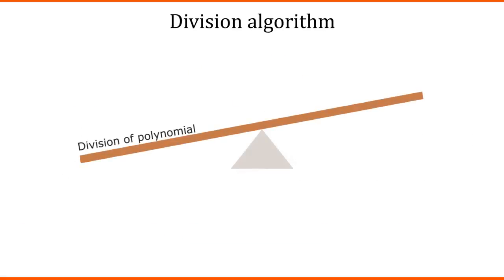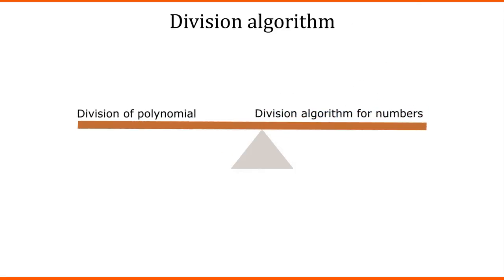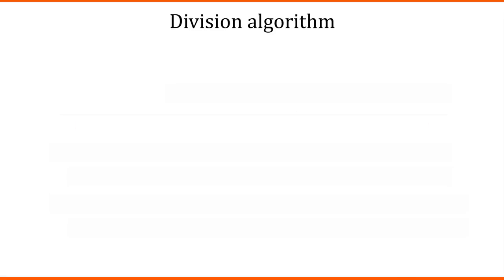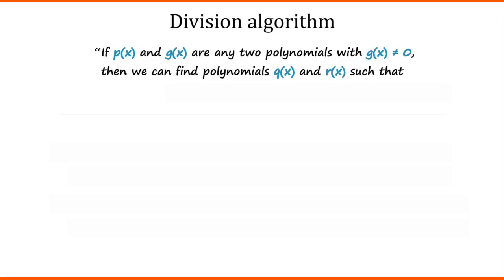Friends, division of polynomial is same as division algorithm of numbers. Only difference is we have variables in polynomials. So, here we can say that if p of x and g of x are any two polynomials with g of x not being equal to 0, then we can find polynomials q of x and r of x such that p of x will be equal to g of x multiplied by q of x plus r of x.